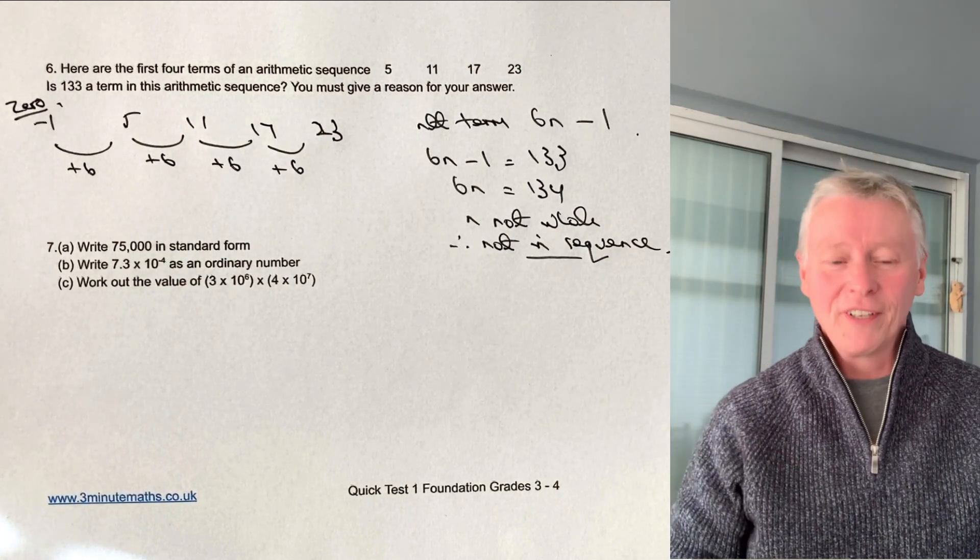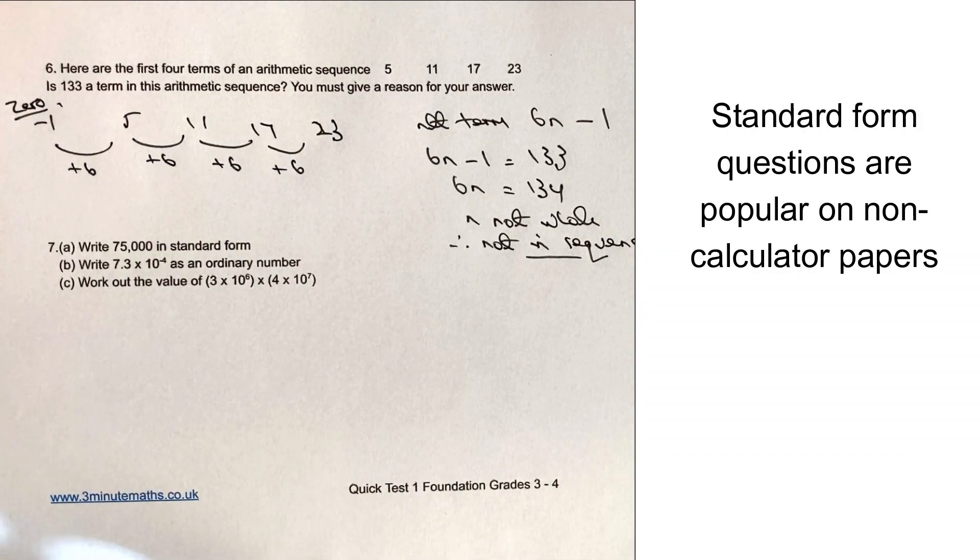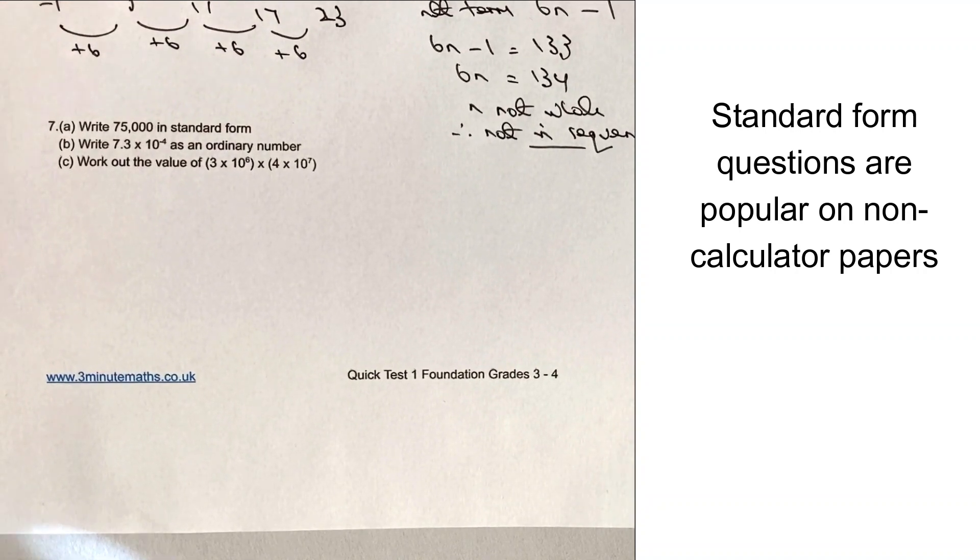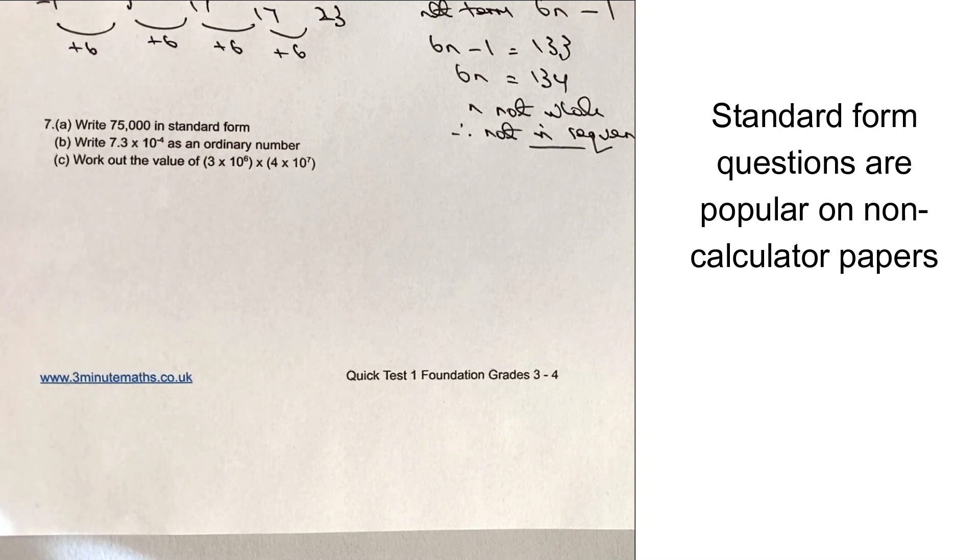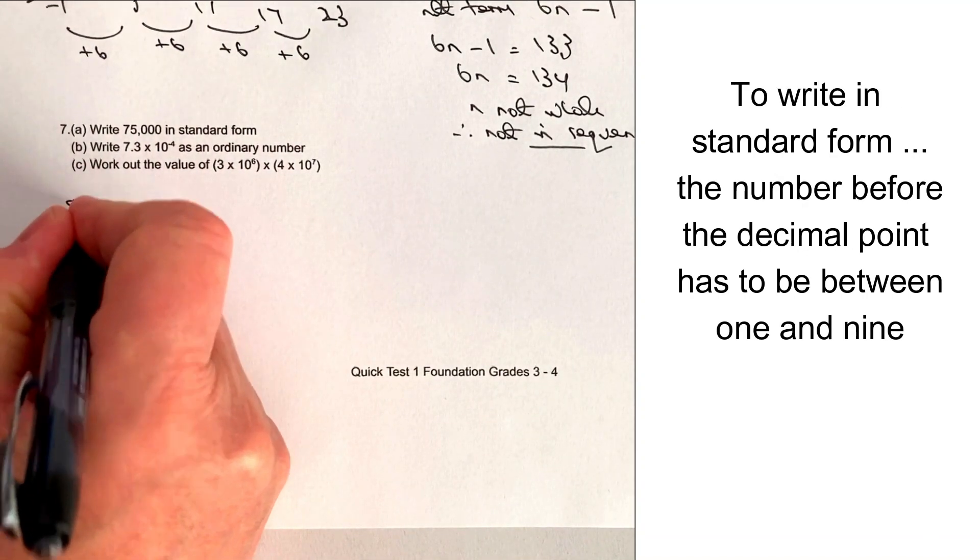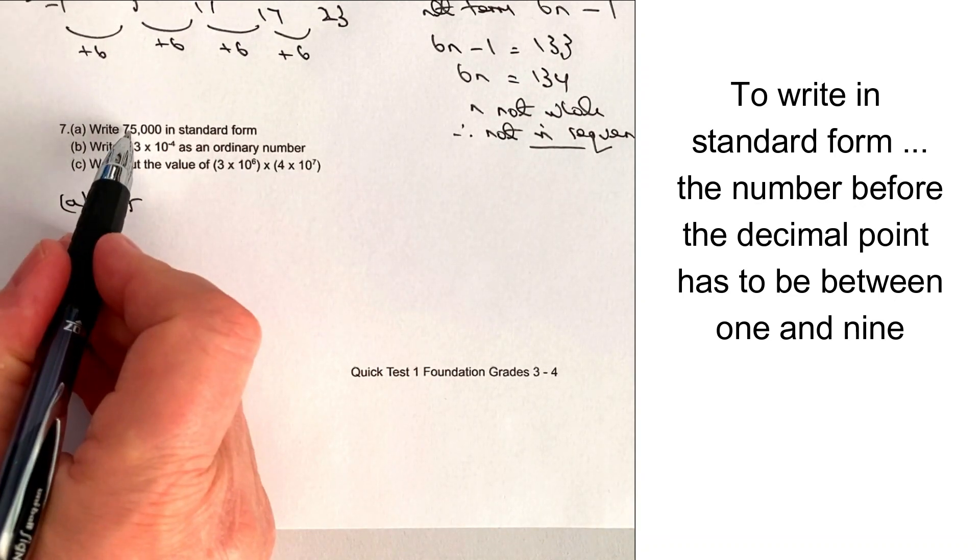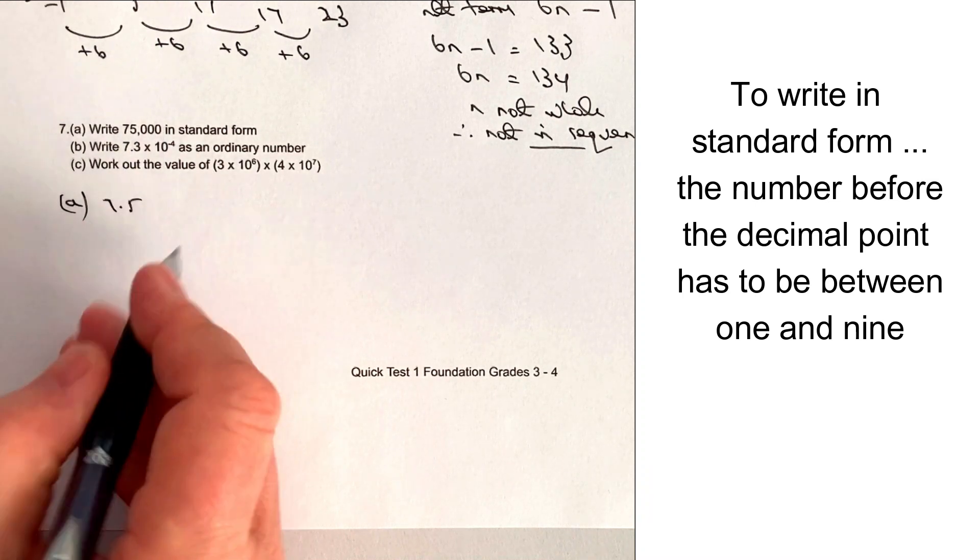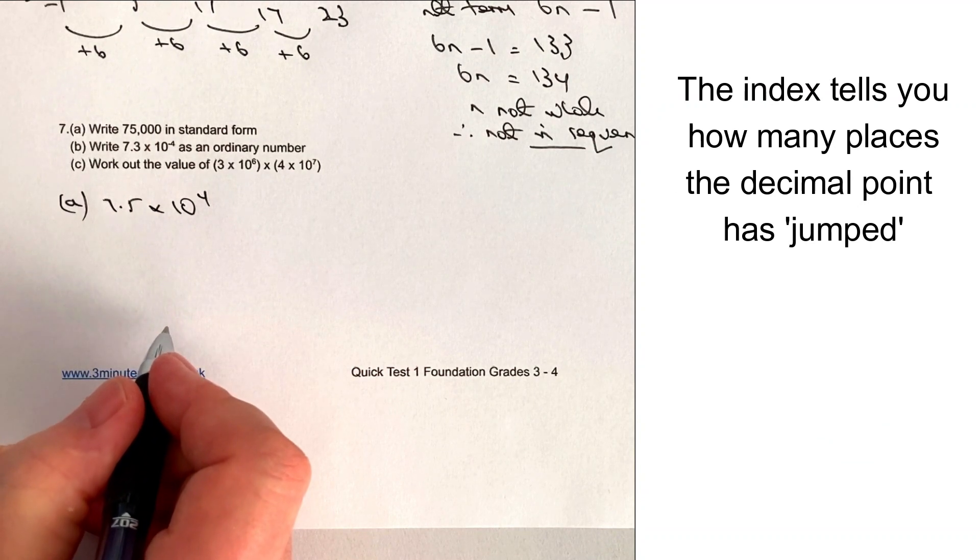Let's move on to the final question in this particular worksheet, which is going to be question number seven. And in this, we're going to be looking at standard form. Again, very, very common for a lot of these types of GCSE papers. And we'll just go through that fairly briefly. Standard form, you need the first part of it to be between one and nine. So that's going to be 7.5. And then I've moved the decimal place. One, two, three, four. So it's times 10 to the power of four. And that would be the first one.